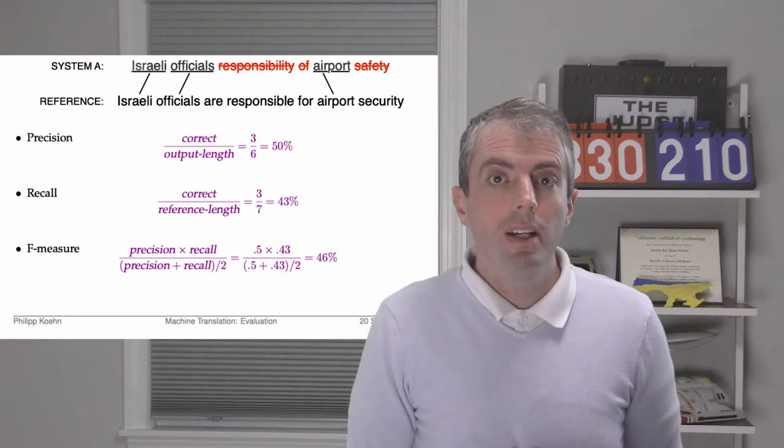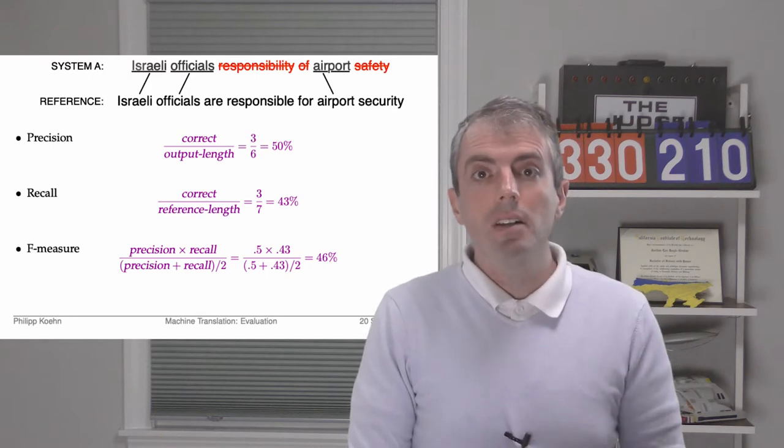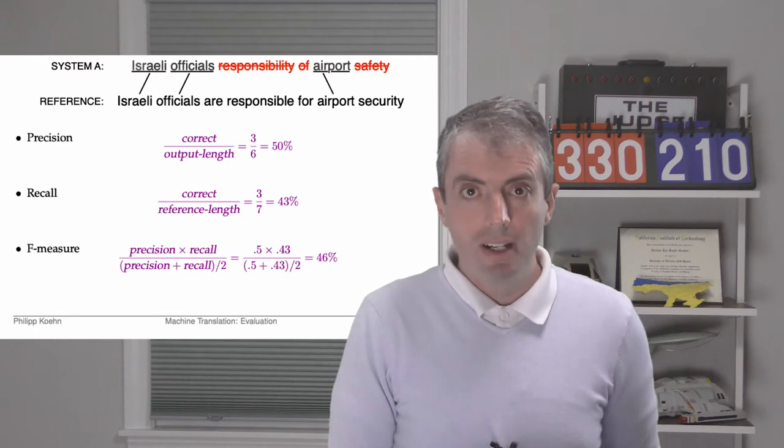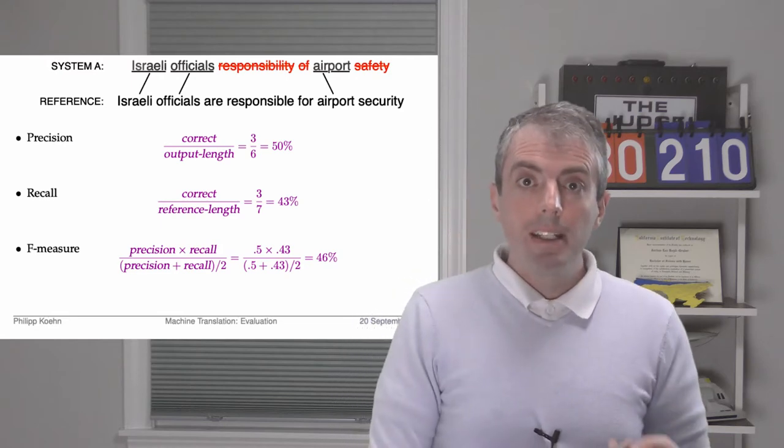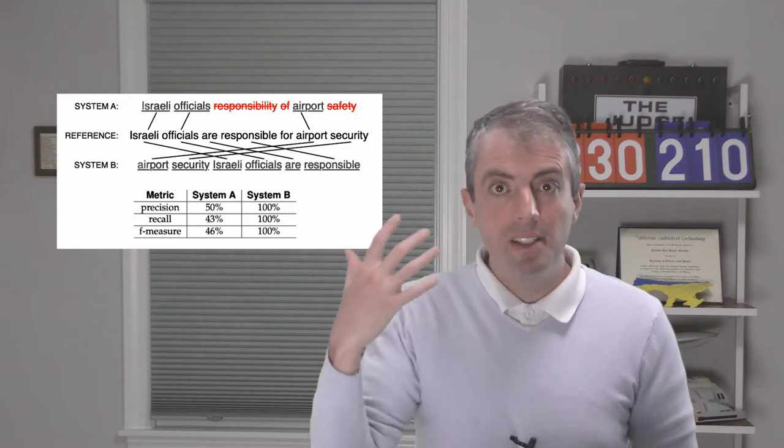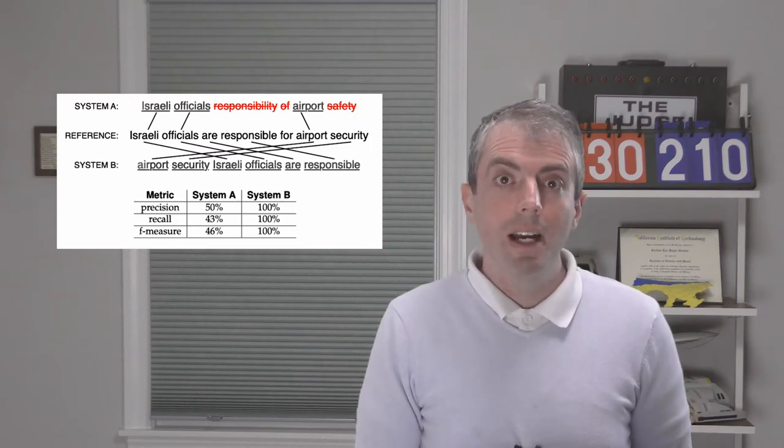Precision is counting up all of the words that you generated, how many are in the reference, and recall is counting up all of the words in the reference, how many did you generate. But this isn't perfect, it ignores word order. And it doesn't really allow for paraphrases, you need to get every word exactly right.